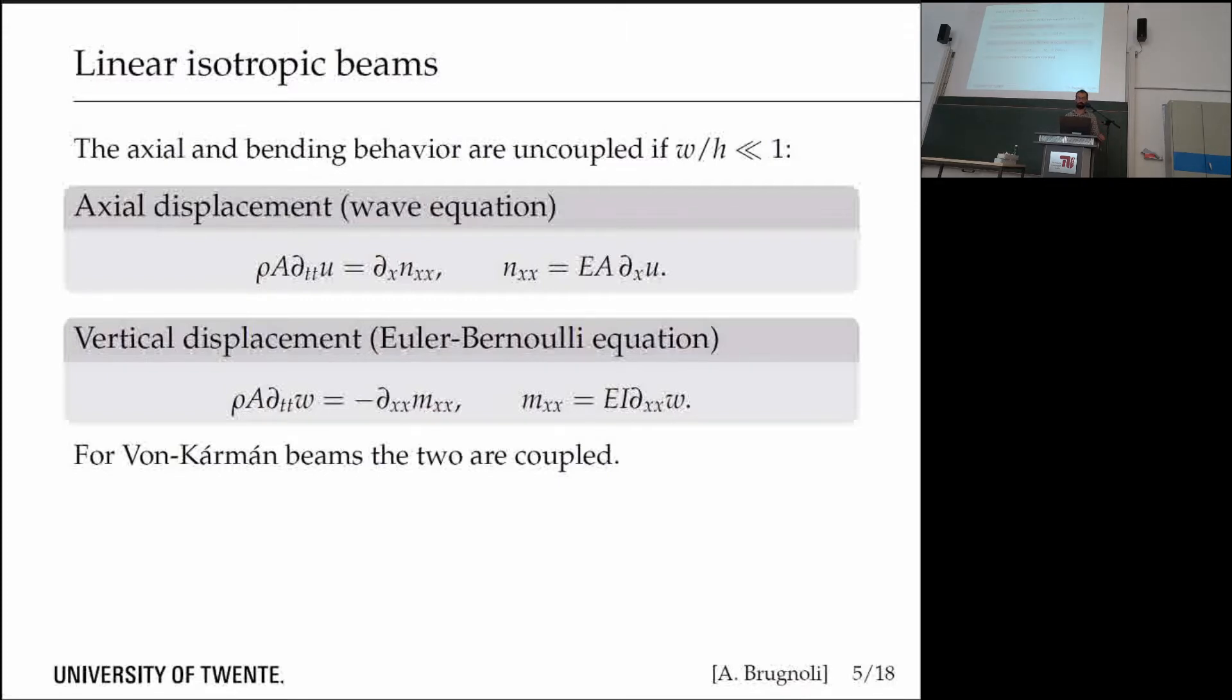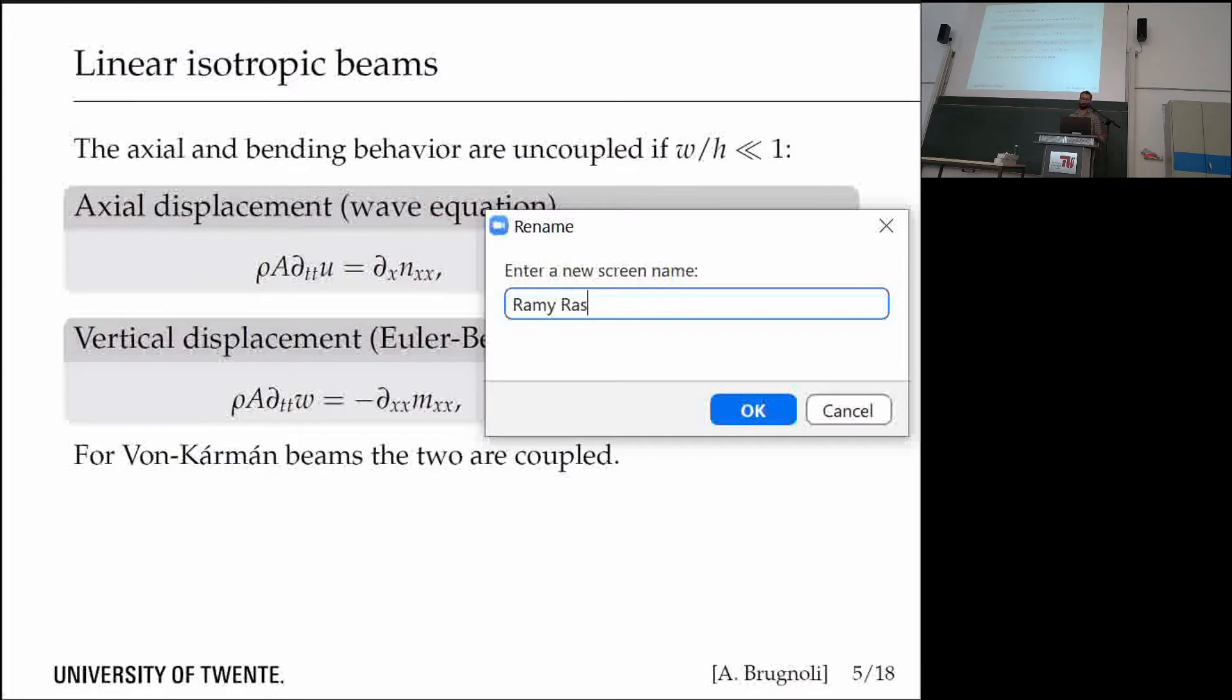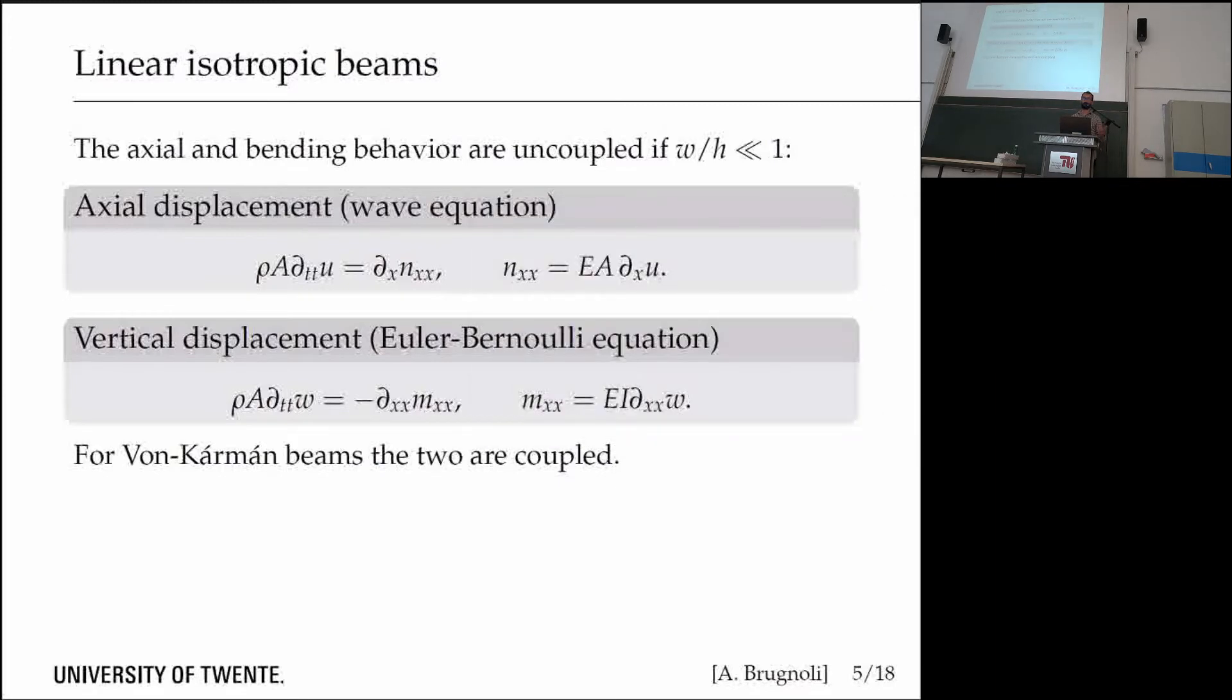Then you have the vertical displacement PDE, which is an Euler-Bernoulli model with a Laplacian of the momentum distributed along the beam. This momentum is proportional to the curvature. In the isotropic case the two PDEs are completely uncoupled. But in von Kármán beams these two PDEs will be coupled.